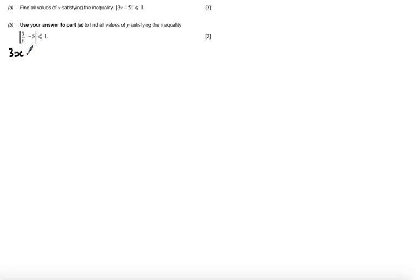First of all, 3x minus 5 considering that less than or equal to 1, or we're going to consider 3x minus 5 greater than or equal to minus 1. And remember because we're doing the negative solution we have to reverse the inequality.